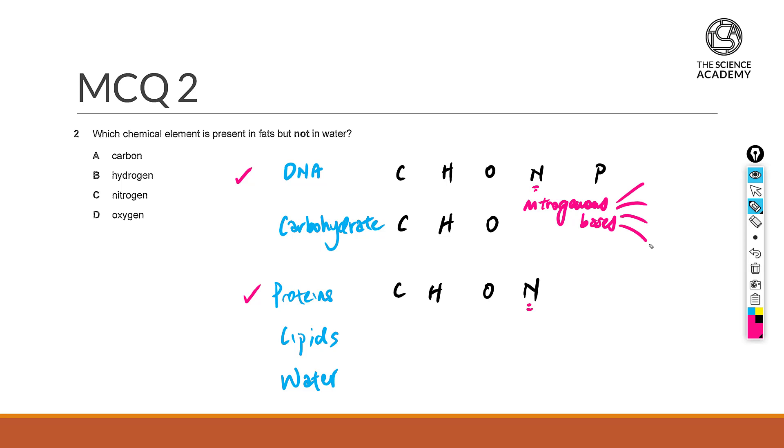This is seen in your nitrogenous bases that is used for complementary base pairing between the DNA strands, and we have items like adenine, thymine, guanine, as well as cytosine.